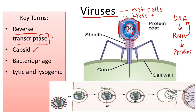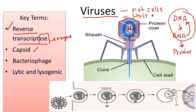Hence the term reverse transcriptase. This is the name of the enzyme that enables viruses to reverse transcription. Transcription is the process in humans of coding our DNA into messenger RNA in order to produce proteins like enzymes. This is powerful — viruses have this unique ability to use our own machinery to produce more of their own RNA and protein codes.